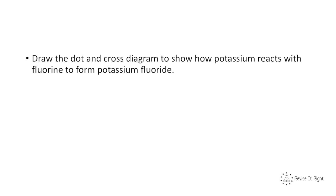We can draw dot and cross diagrams to show ionic bonding. I'm going to talk you through a couple of examples. The first question: draw the dot and cross diagram to show how potassium reacts with fluorine to form potassium fluoride.